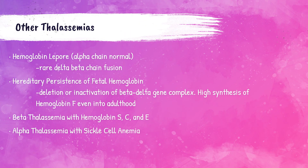There are other thalassemias as well. Hemoglobin Lepore occurs when the patient has a delta-beta chain fusion and is typically asymptomatic. There is also a disorder where fetal hemoglobin persists into adulthood; normally adults have 1 to 2% hemoglobin F, but in this condition there is high synthesis of it continuing through adulthood, and patients are usually asymptomatic. There can also be patients who have beta thalassemia combined with hemoglobin S, C, and E, and alpha thalassemias combined with sickle cell anemia.